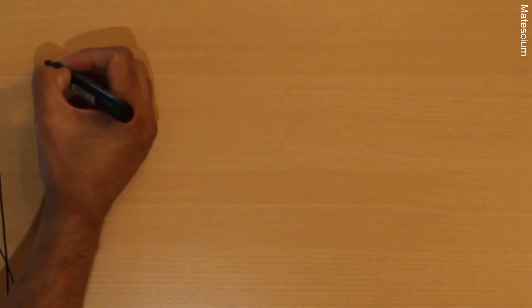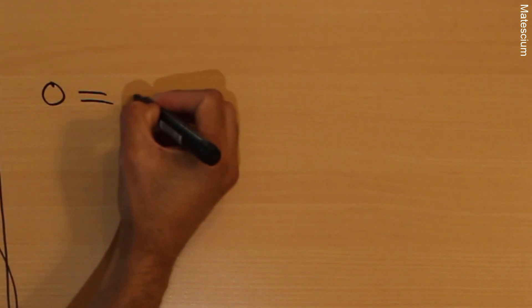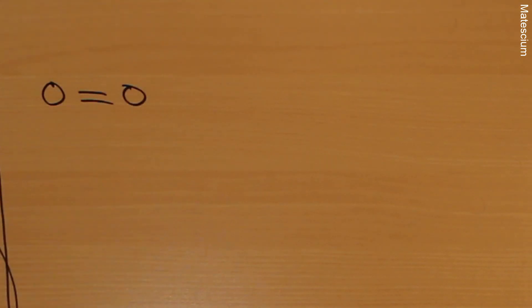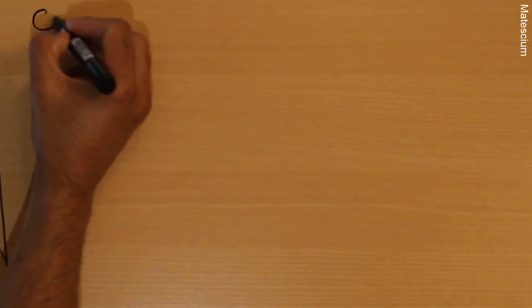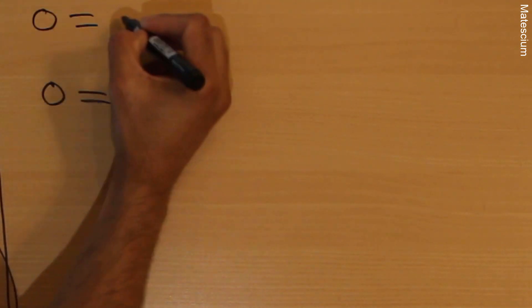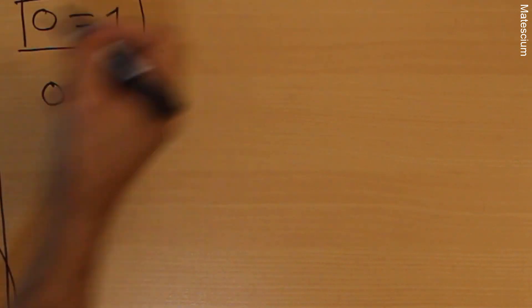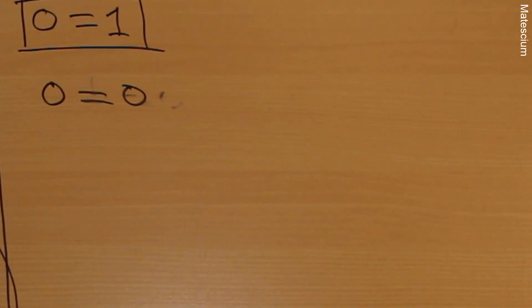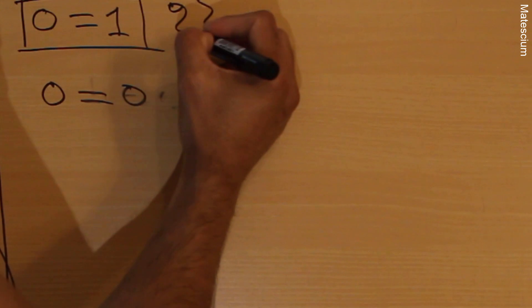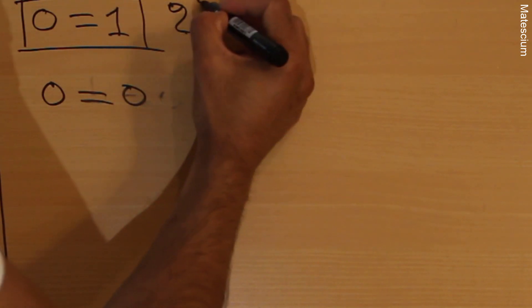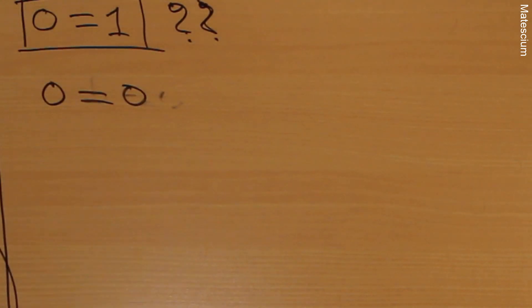We know that zero equals zero. What I am going to prove is that zero equals one. This is another strange proof. So how am I going to prove it? Let's check it out here.